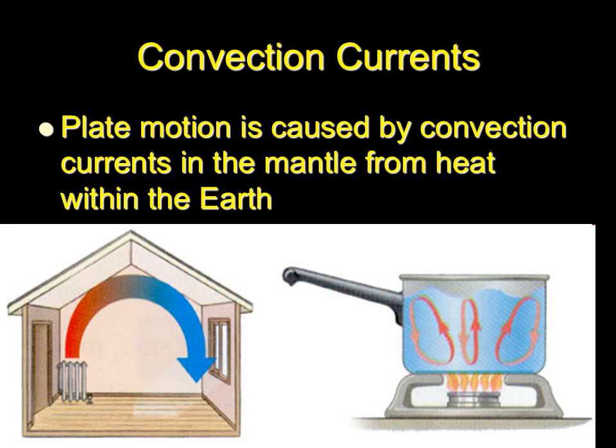Before getting into that, we need to talk about plate motion and how it's caused. Plate motion is caused by convection currents. Convection happens because of density differences, which happen as a result of temperature differences. The easiest way to understand this is by looking at a pot of boiling water.